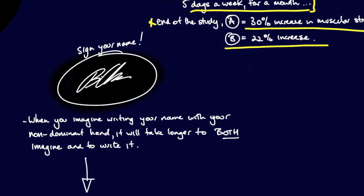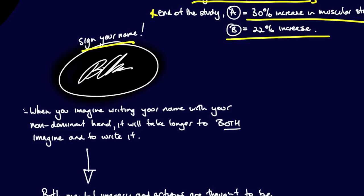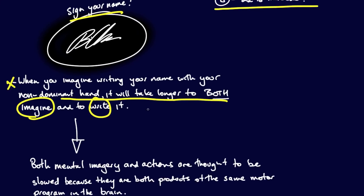Here's a fun exercise, signing your name. When you imagine writing your name with your non-dominant hand, it'll take longer to both imagine and to write it. So let me write it with my non-dominant left hand. That is just god forsaken terrible. It looks like I haven't slept for a week.